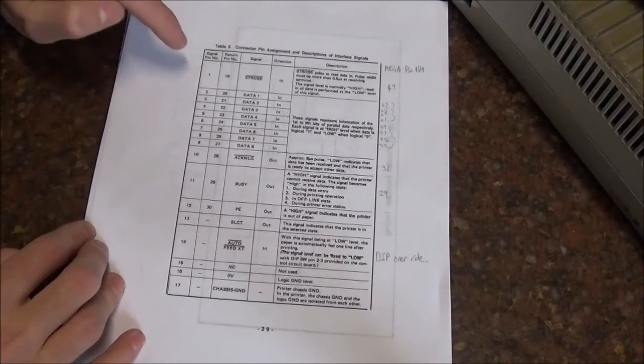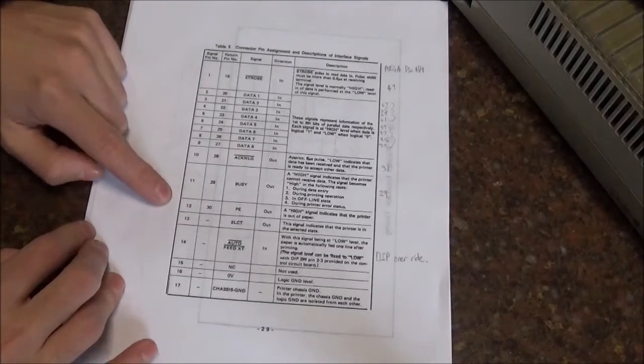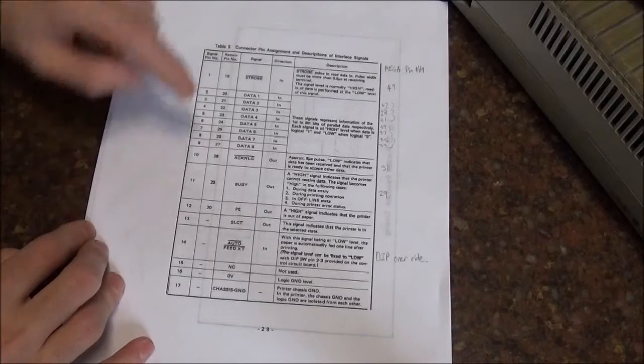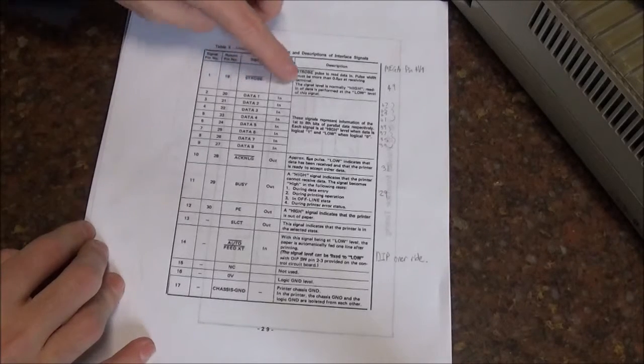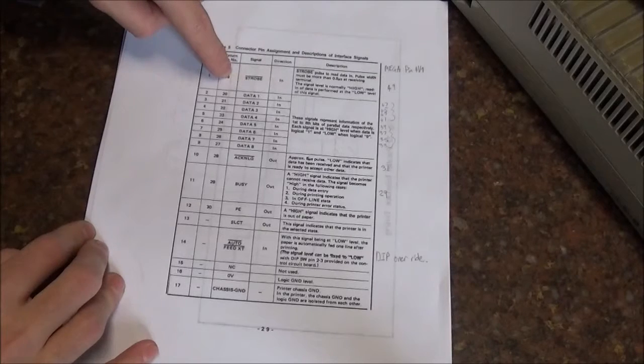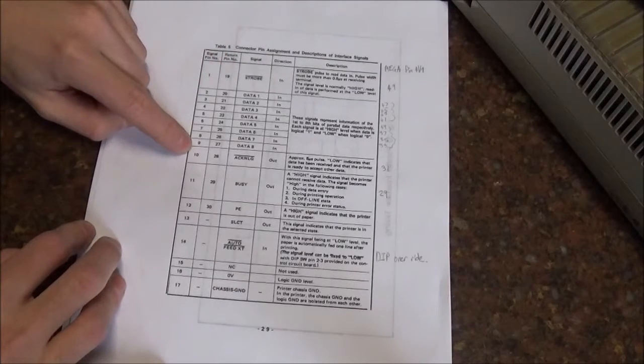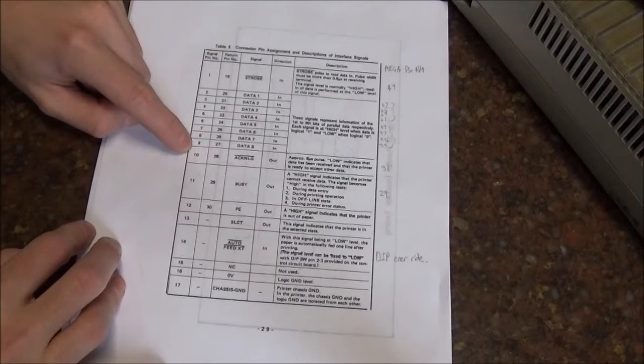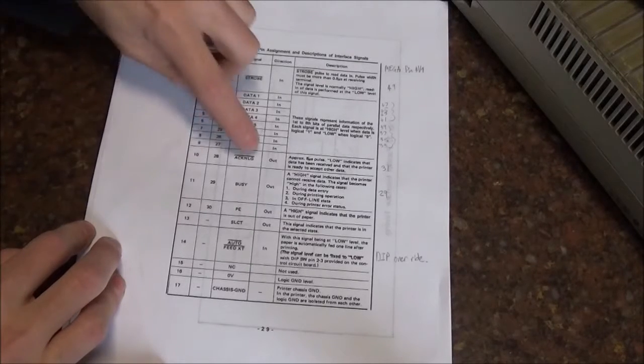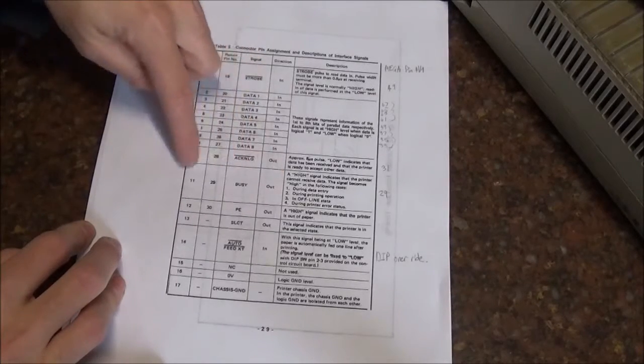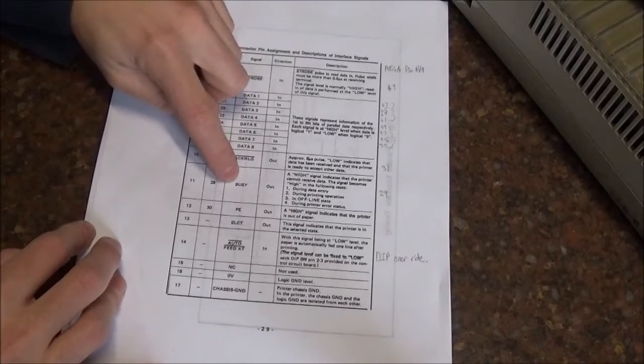This table is helpful because it gives us the four main groups of pins that we're going to need to interface with the printer. First we have the strobe pin, which is how we latch new data into the input buffer of the printer. We have the 8-bit data bus, which communicates ASCII characters and commands to the printer. Then we have these two handshaking pins, which are the acknowledge pin and the busy pin.